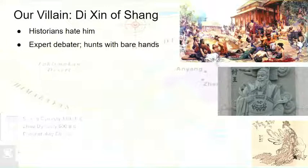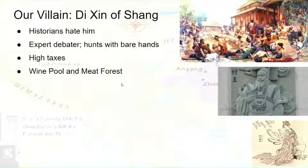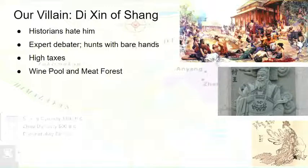The only positive aspects of Di Xin were that he was an expert debater and he was so strong he hunted with his bare hands. But let's talk about why he's hated. First, he instituted high taxes, and he used those taxes to build a wine pool and a meat forest, as you can see on the upper right. Those wine pools and meat forests were for his own private use. He and his guests would party in the wine pool, and when they got hungry they would eat meat kebabs from trees planted around the pool.